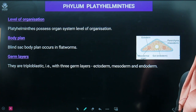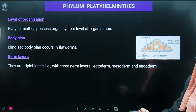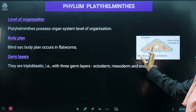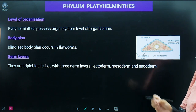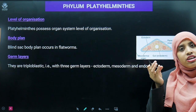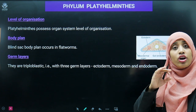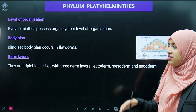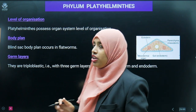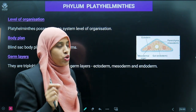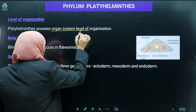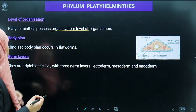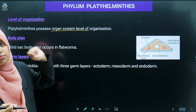Now the level of organization: in these organisms, cells, tissues, organs, and organ systems are all present — including nervous system, digestive system, and others. That means they are showing organ system level of organization.